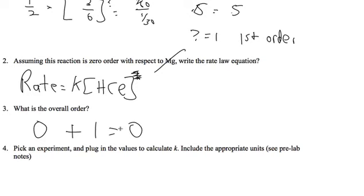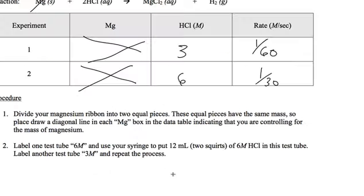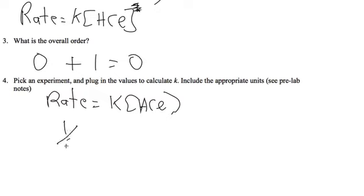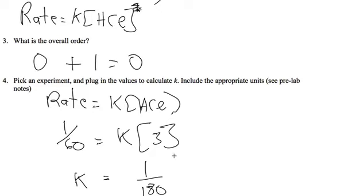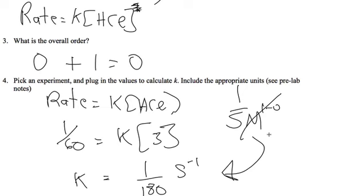Pick an experiment and plug in the values to get K. So rate equals K HCl. I'm going to do experiment one. And on experiment one, the concentration was three and the rate was 1/60. So 1/60 equals K times three. So K equals one over 180. And the overall order was one. So the units are going to be seconds to the negative one because it would be one over seconds molarity to the overall power minus one. And this would go to one.